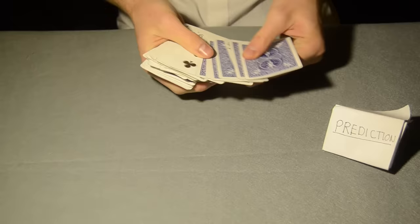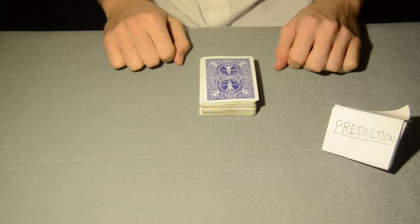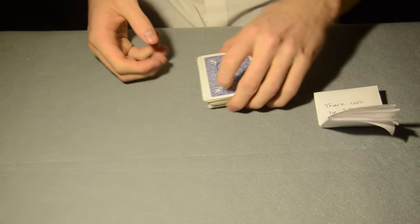Now spread through the cards and show that it is completely mixed and shuffled. If you see the Ace of Spades is face up, then turn the deck over and this will make your prediction correct. If you don't see the Ace of Spades when you are spreading through the deck, then it means the Ace of Spades is already face down and therefore leave the deck in the same orientation.